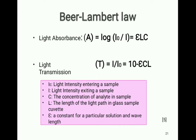Next, we have Beer-Lambert's law. Light absorption, i.e., A, is equal to ECL, where E is a constant, L is the path length, and C is the concentration.